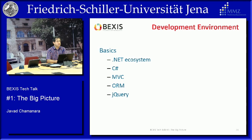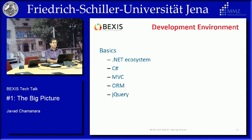We are using the .NET ecosystem. Specifically, we are programming in C#, currently around version 4.5 something, and we upgrade every few months if there is something new. For the development pattern, we are basically using MVC with some small modifications that will be covered in more detail in later talks. For data access and dealing with relational databases specifically, we are using object-relational mapping (ORM). For client-side programming, we are basically using jQuery plus UI components from various providers, all completely open source or free software.